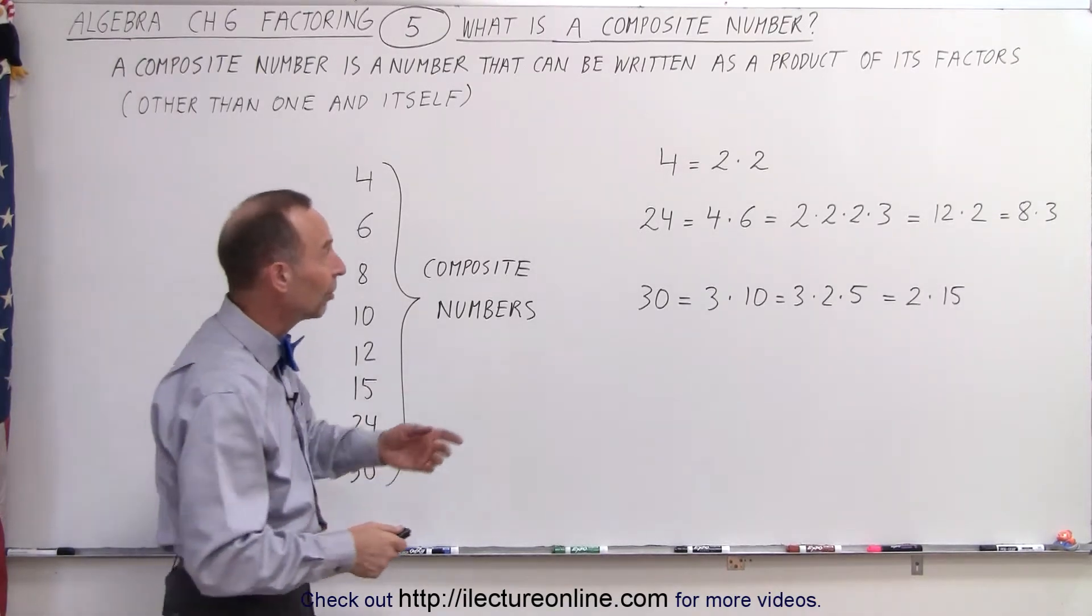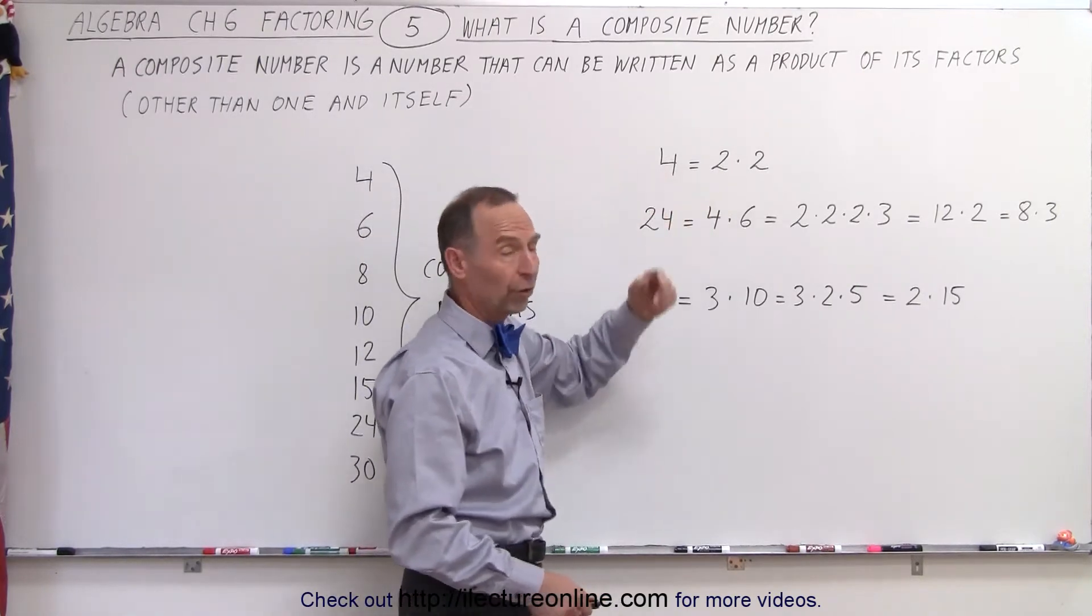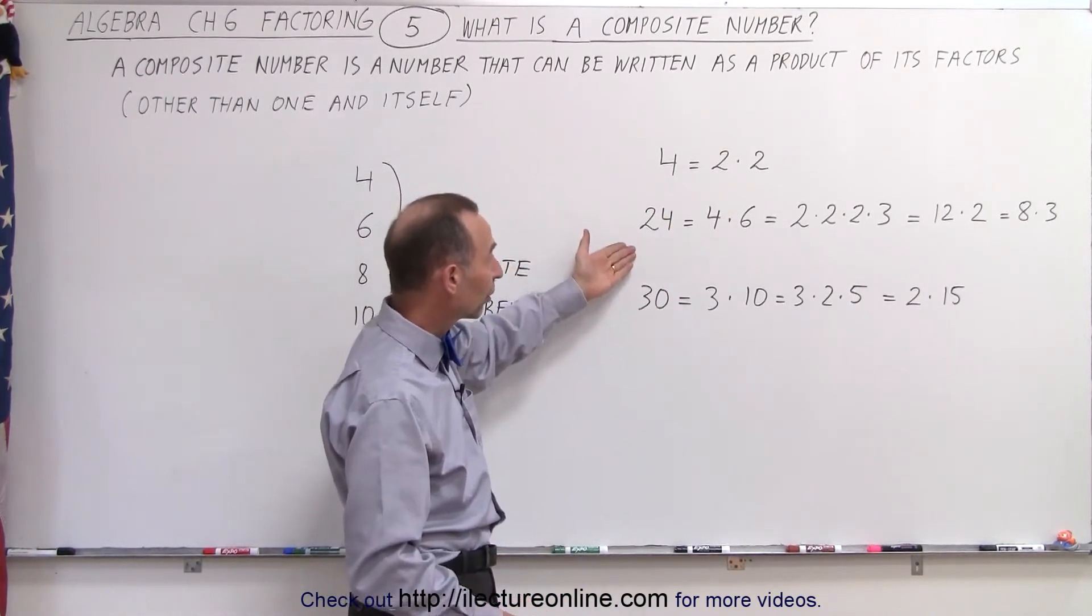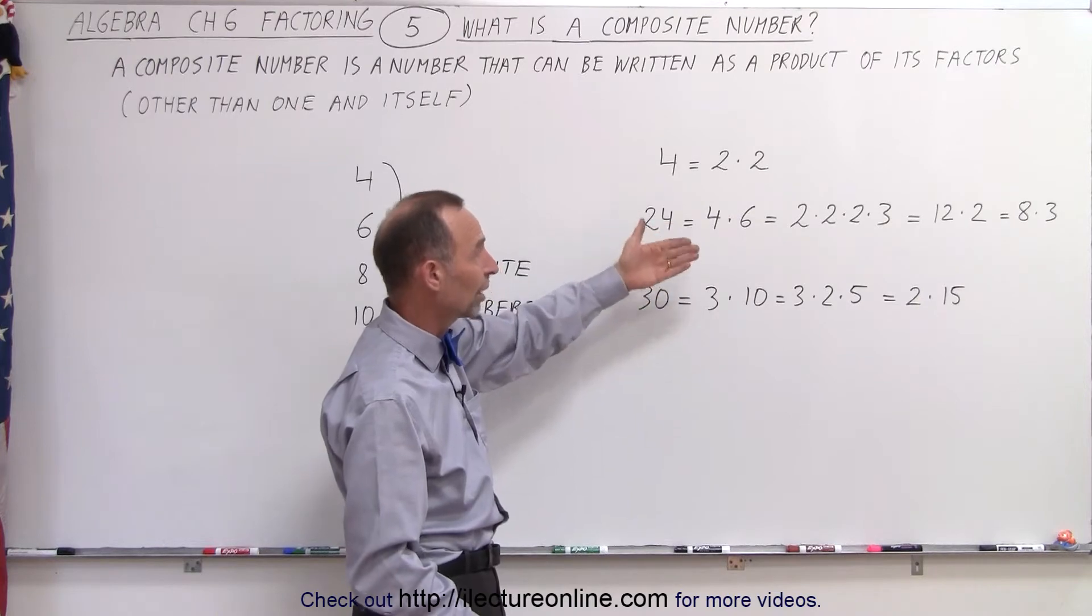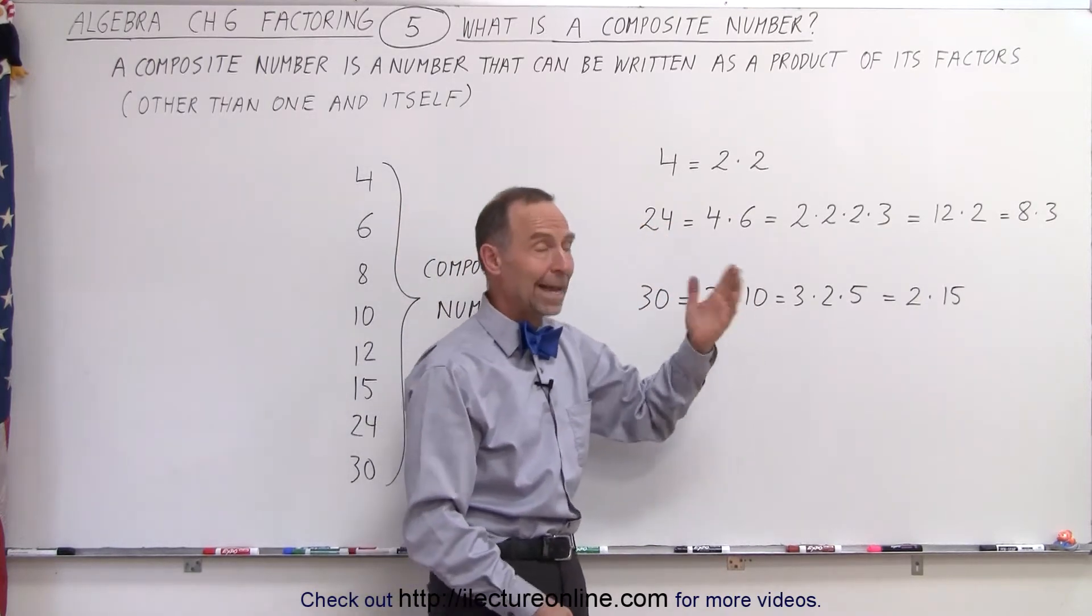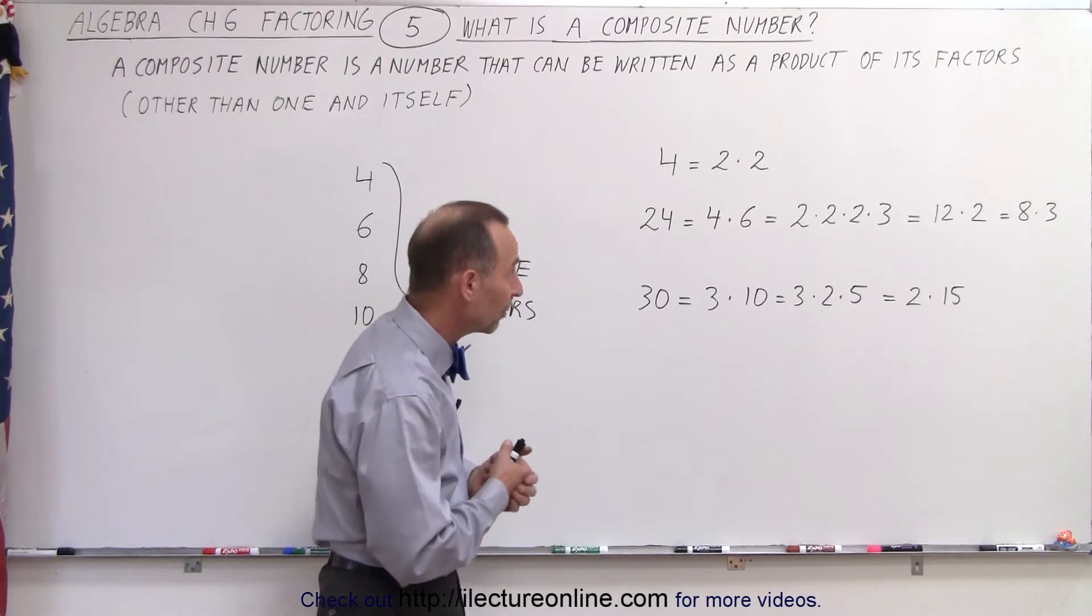So here are some examples. The number 4 can be written as 2 times 2, so 4 is a composite number. 24 can be written as 4 times 6, or 2 times 2 times 2 times 3, or 12 times 2, or 8 times 3. So 24 is a composite number.